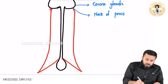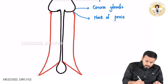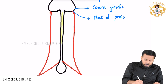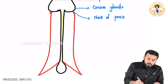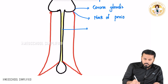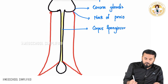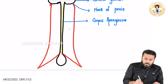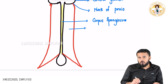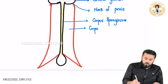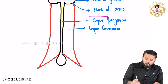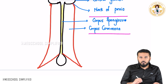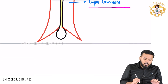The center part which I am highlighting in yellow is called the corpus spongiosum. After that the part which is in the periphery on either side is called corpus cavernosa. So there are two important things: corpus spongiosum and corpus cavernosa.